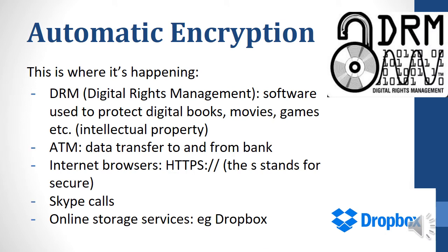These are the places where automatic encryption happens. DRM, or digital rights management, is software used to protect intellectual properties like digital books, movies, or games. When an ATM transfers data to the bank and gets data back, that is encrypted. In internet browsers, a normal website will show HTTP in the URL, but if you see HTTPS, you know that secure encryption is happening. Skype calls are also encrypted, and online storage services like Dropbox or any cloud storage is usually encrypted.